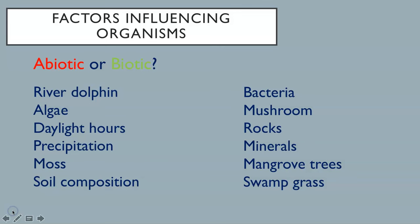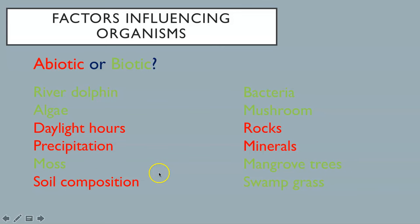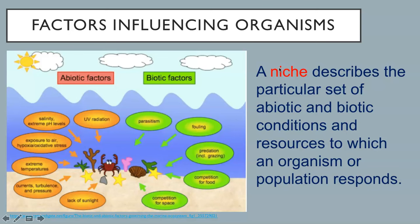Stop the movie and identify which of these are abiotic and which are biotic factors. Whether abiotic or biotic, these factors influence an organism's well-being. They also affect population size, which we will talk about later in this movie. Remember, a niche describes the particular set of abiotic and biotic conditions and resources to which an organism or population responds.